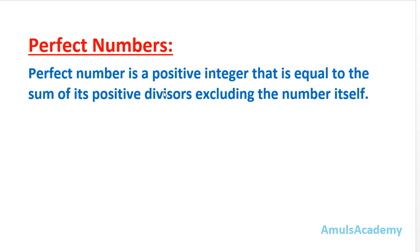Before going to the program we will see the definition of perfect numbers. A perfect number is a positive integer that is equal to the sum of its positive divisors, excluding the number itself. To check whether a number is perfect or not, we need to find out the positive divisors of that number, add them, and then check the sum with the actual number. If both are the same, then that number is a perfect number.